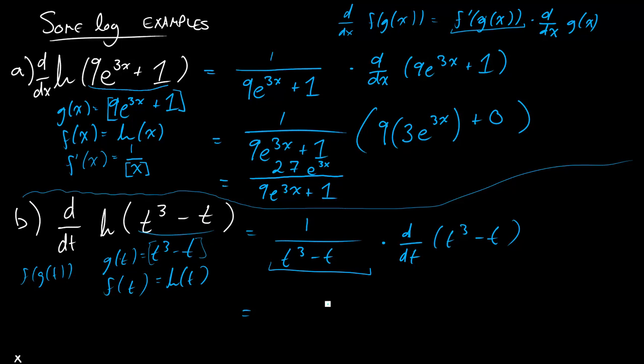And I can just simplify this all in kind of one fell swoop. And so the derivative of my inside, like I said, is 3t squared minus 1. That's what I'll have on the top. And then on the bottom, I just get t cubed minus t.